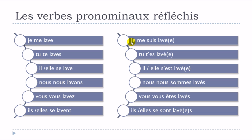Because we use être, we must add the feminine ending when needed. So je me suis lavé becomes je me suis lavée for a woman. Phonetically it sounds the same, but in writing you add the -e. Similarly: tu t'es lavé / lavée, il s'est lavé, elle s'est lavée — keeping masculine or adding feminine as appropriate.